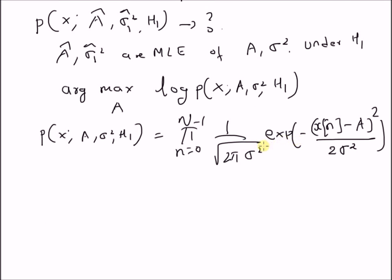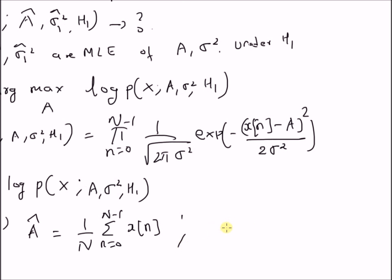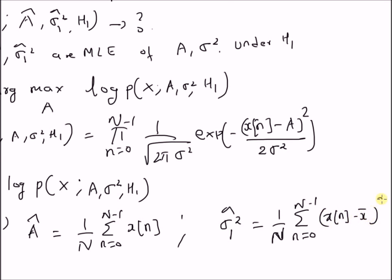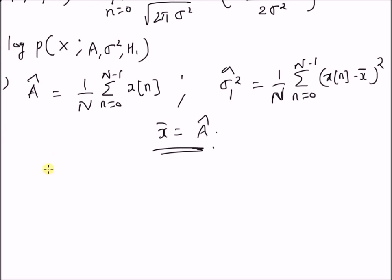This optimization problem was already solved in a previous video. Maximizing the log-likelihood gives: A-hat equals the sample mean, which is (1/N) times the summation from n=0 to N-1 of x[n]. The maximum likelihood estimate of sigma squared, denoted sigma-one-squared-hat, equals (1/N) times the summation from n=0 to N-1 of (x[n] minus x-bar) squared, where x-bar equals A-hat.